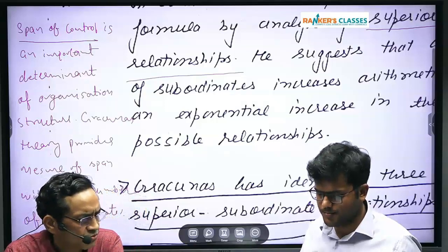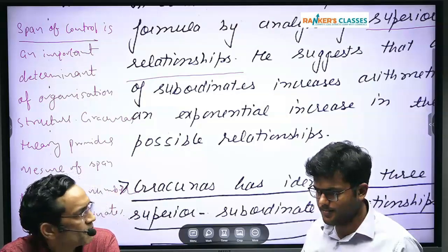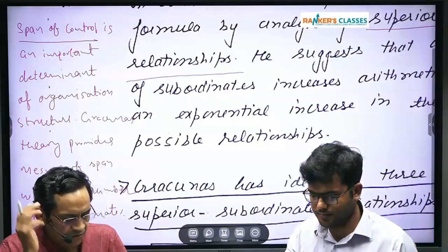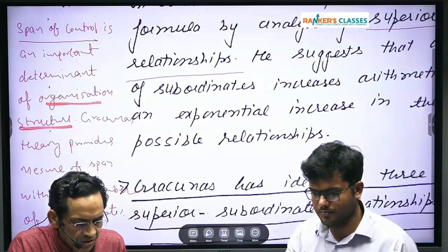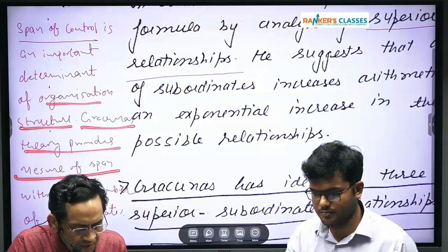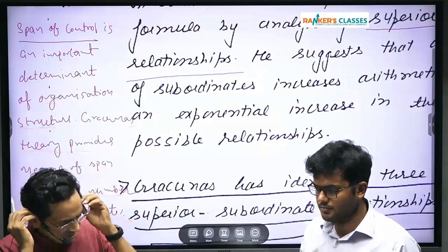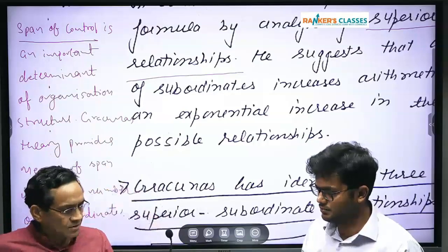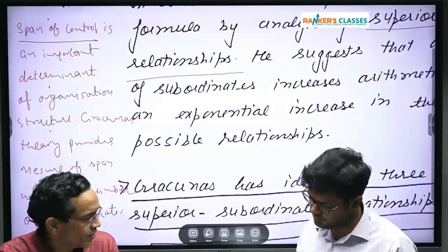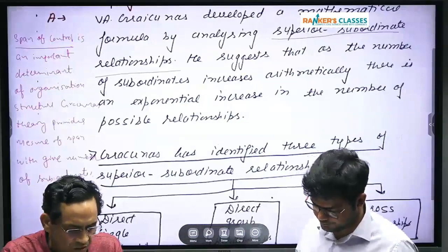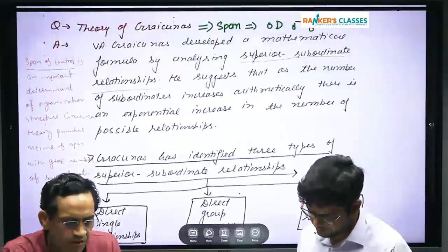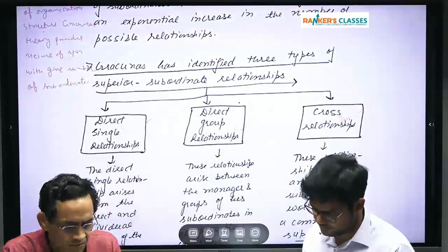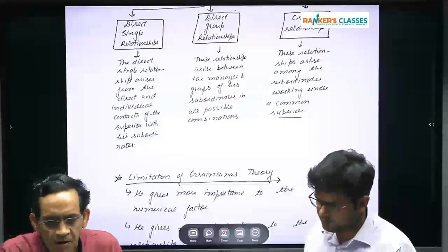It is an important determinant of organizational structure. The theory provides a measure of span with a given number of subordinates. Thereafter you mention the core of the theory: it deals with superior-subordinate relationships, with three important elements of span of control. You define it, but the point of focus should be how it is linked with organizational design or organization structure.